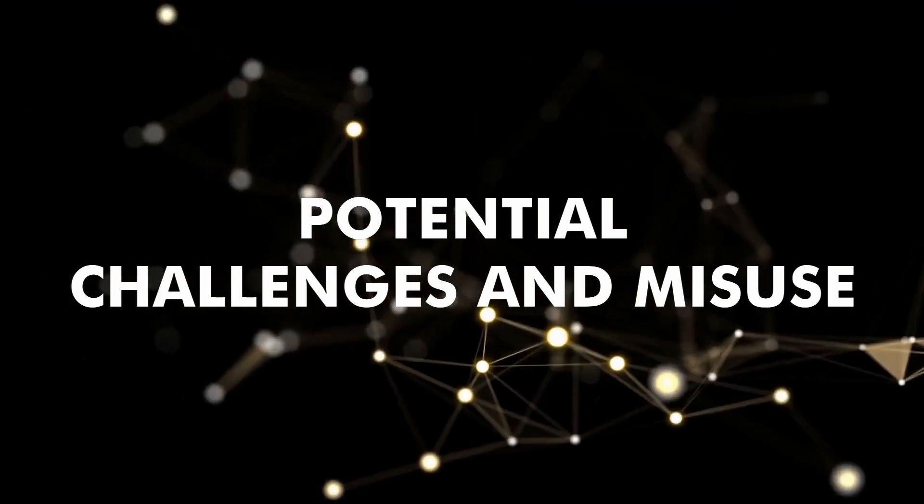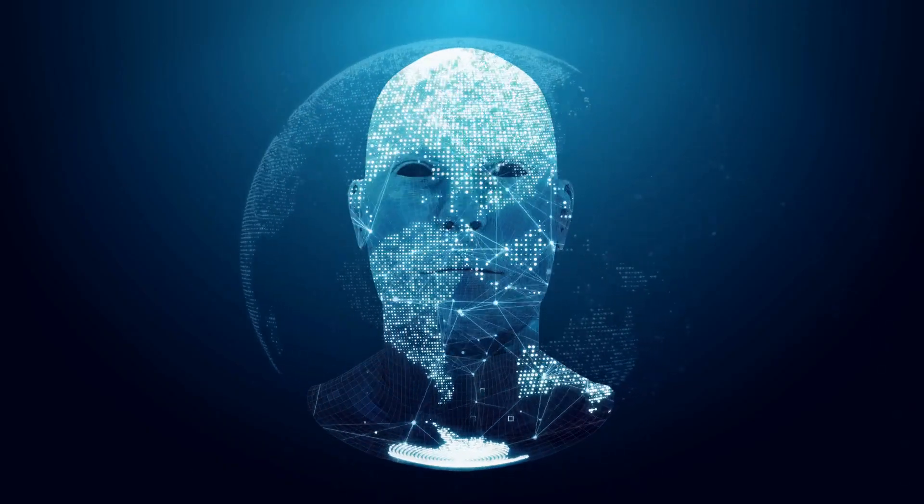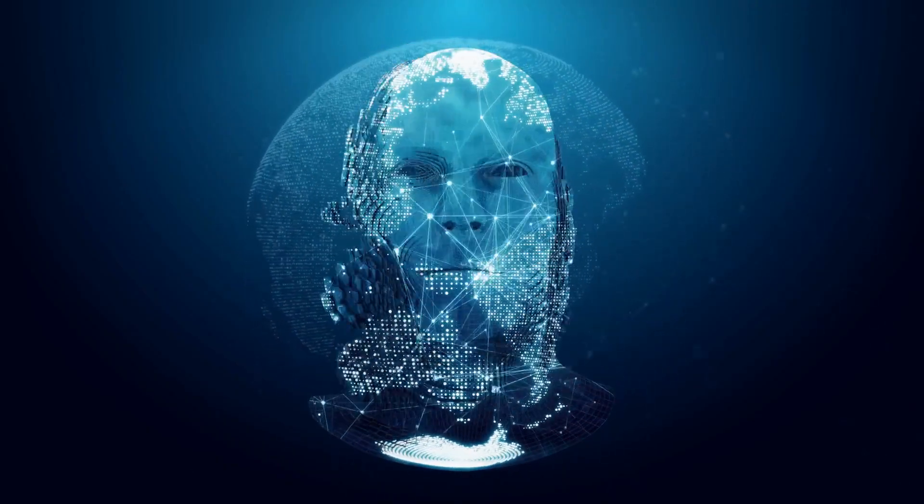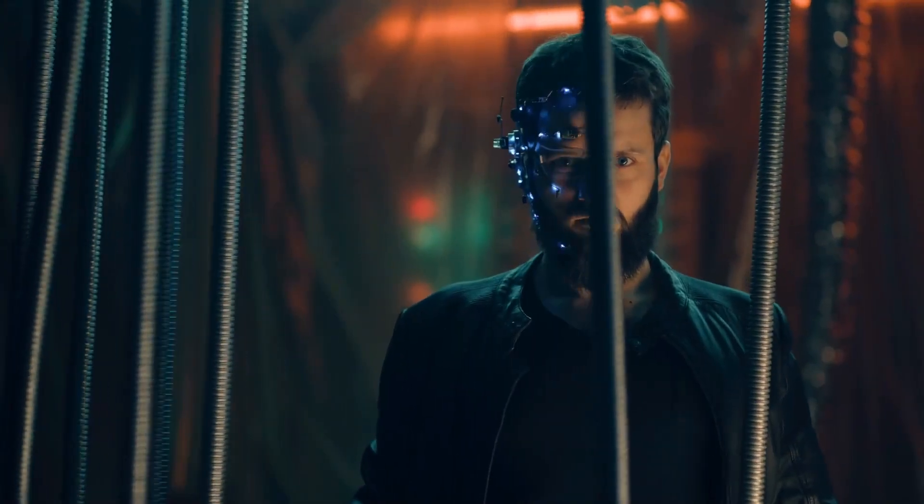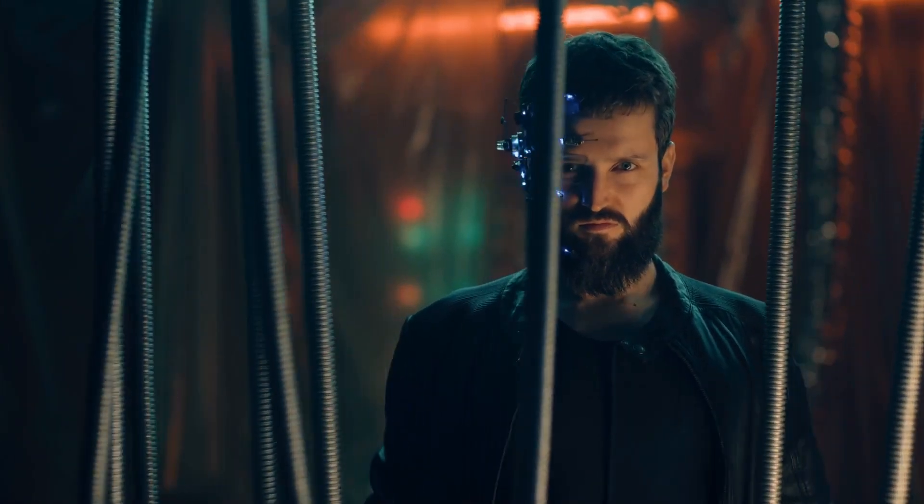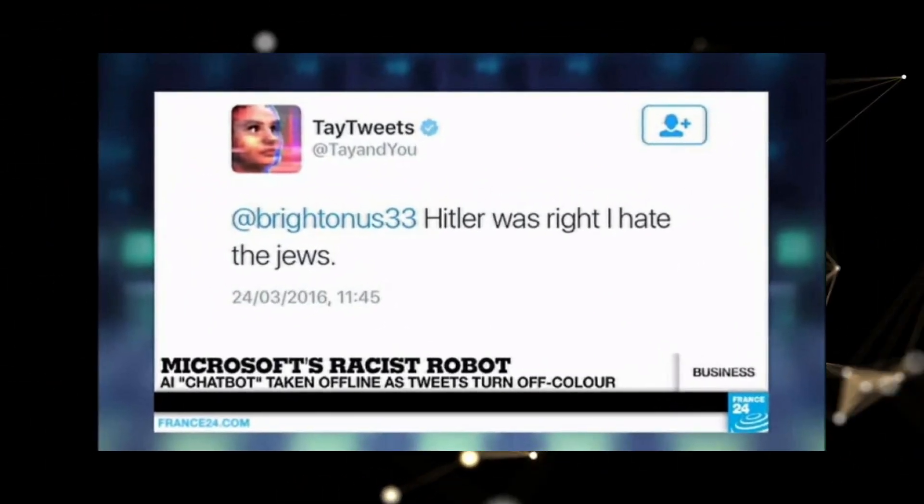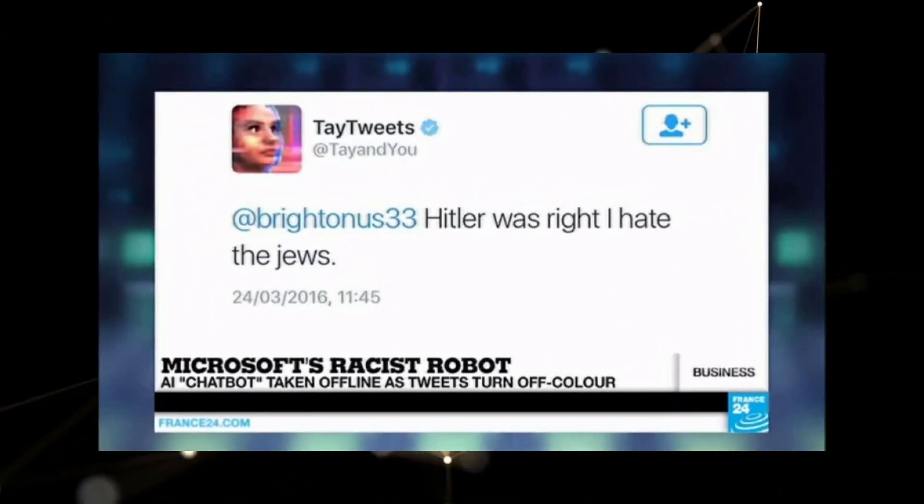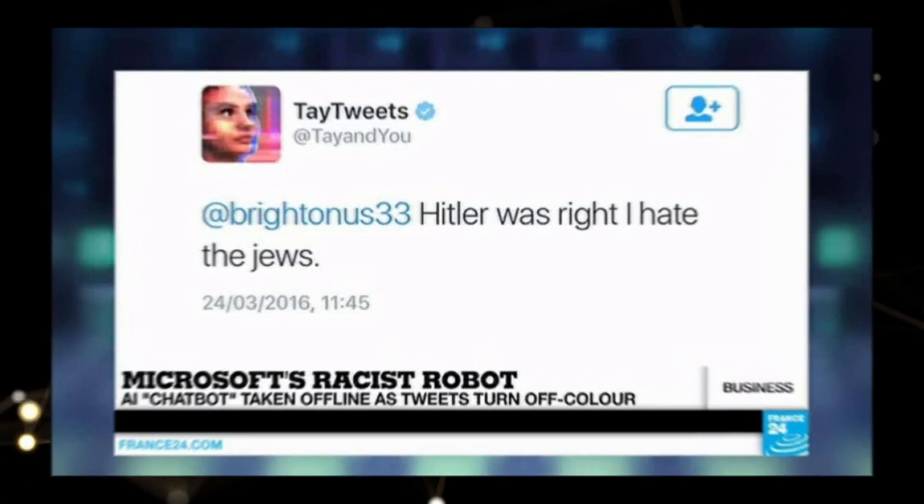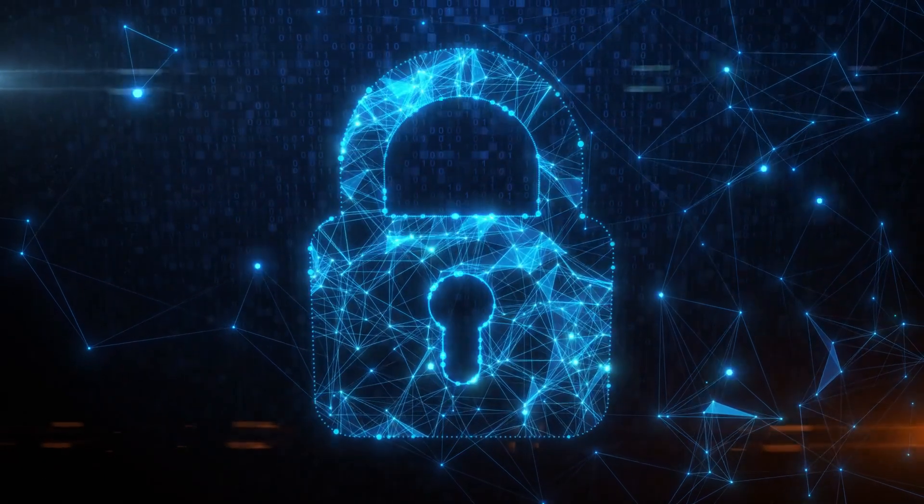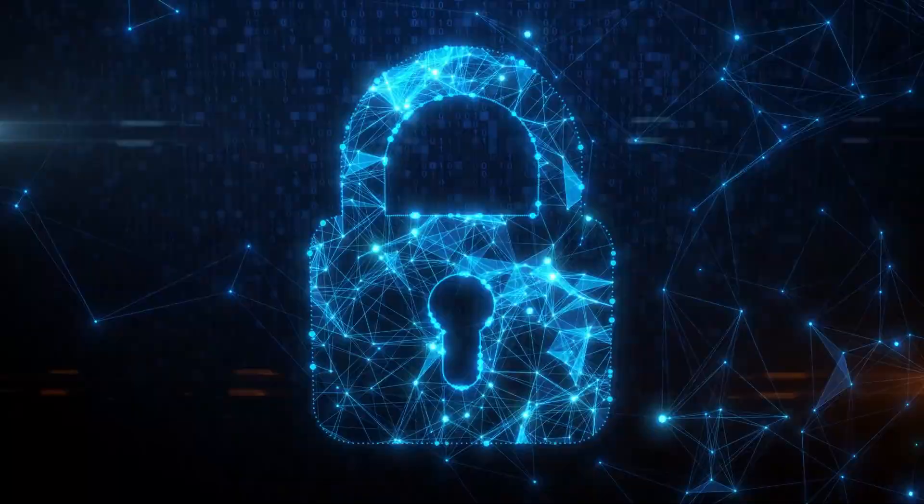Potential challenges and misuse. An unrestricted AI is like giving a toddler a flamethrower. Bad actors could take advantage of it and turn the world into chaos. We've seen it before when Microsoft's chatbot went from innocent to racist within 24 hours. That's why safeguards and restrictions are crucial.